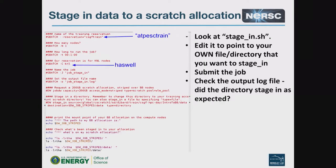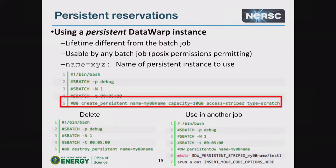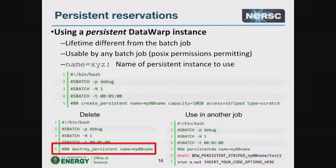There are scripts to demonstrate staging data in, staging data out, and using a persistent DataWarp allocation. If you do create a persistent allocation, I ask that you destroy it and tear it down by the end of the day, otherwise we have to go in and tear down the allocation after your training account expires, which is annoying. To create an allocation, the syntax is pound BB create persistent, and you have to specify a name. The name must be unique — don't just use whatever name is in the example scripts, make up your own. Same as you'd expect, you specify the capacity, access mode, and type. To delete it, the command is simply destroy persistent.